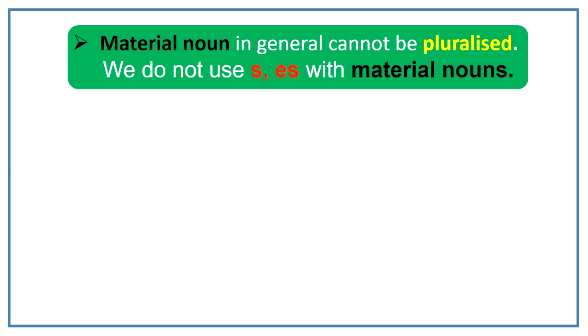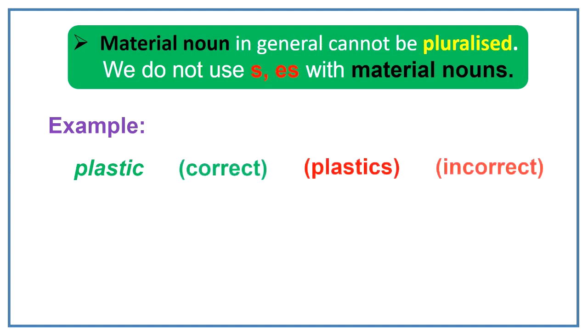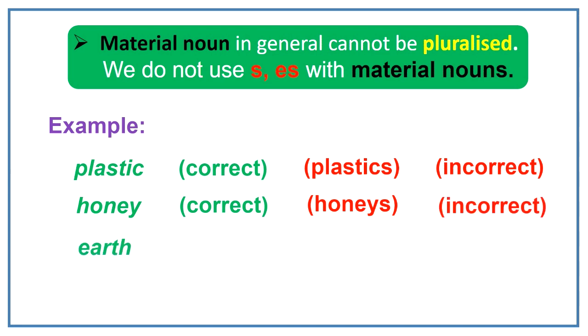Material noun in general cannot be pluralized. We can say that we do not use s or es with material nouns. For example, plastic. This is correct. Plastics. This is incorrect. Honey. This is correct. Honeys. This is incorrect. In the same manner, earth. This is correct. Earths. This is incorrect.